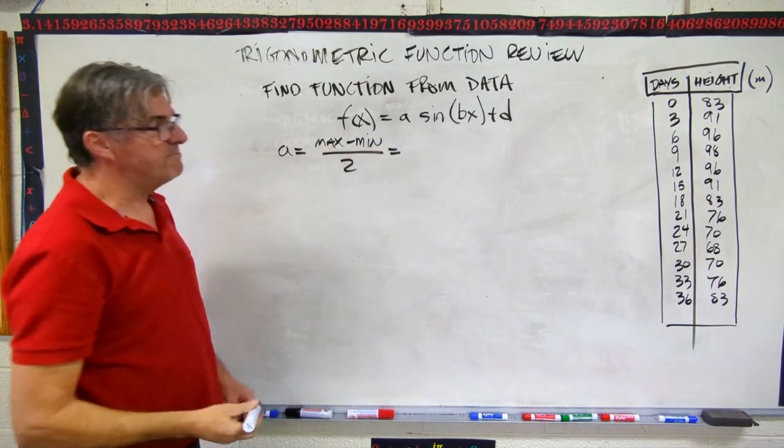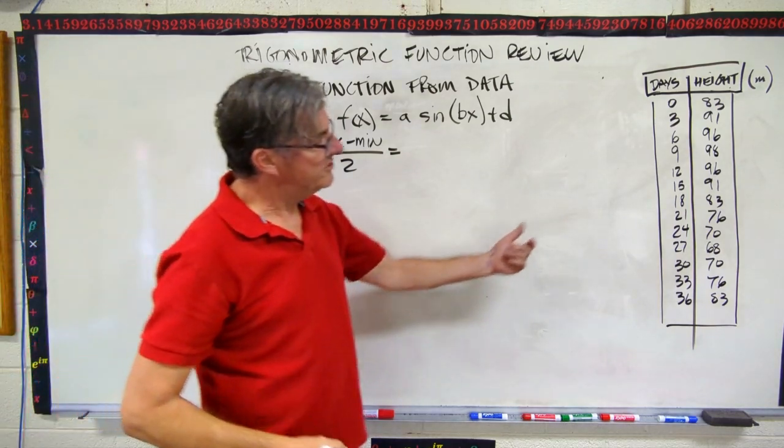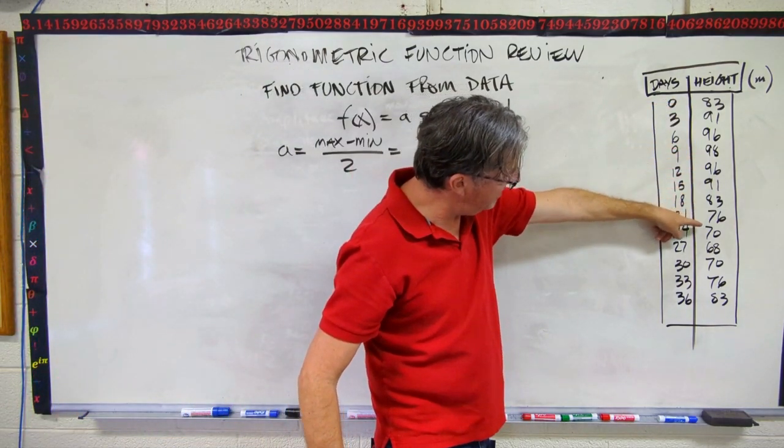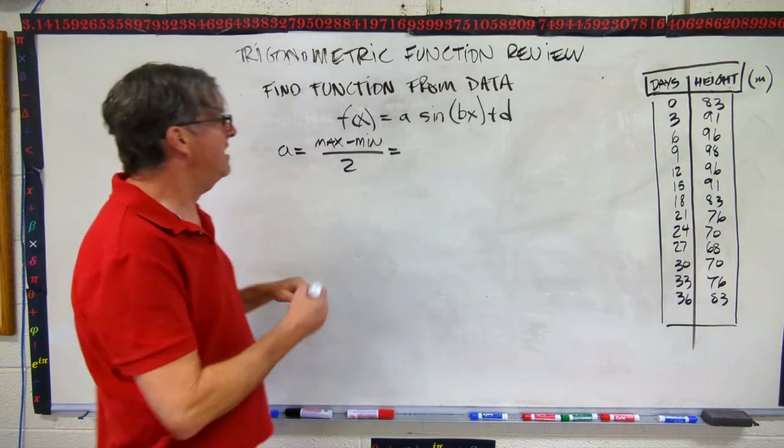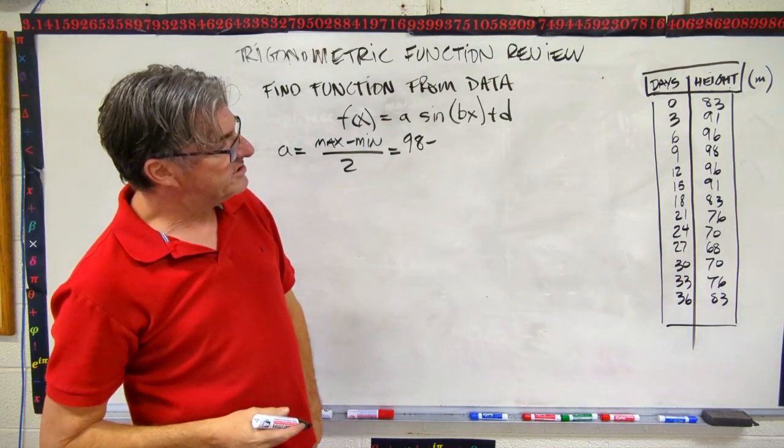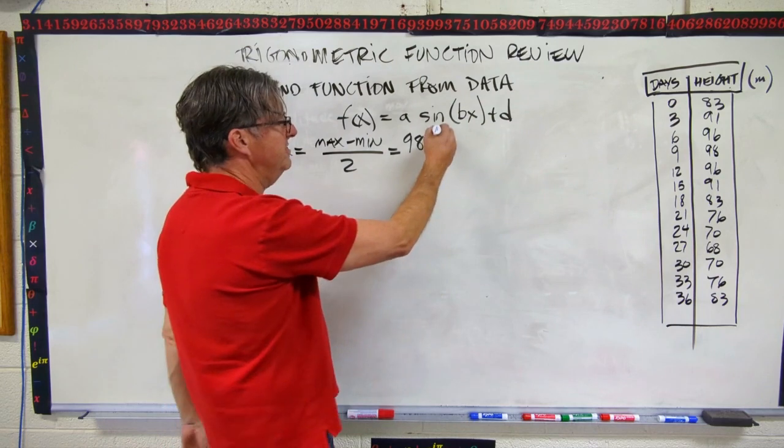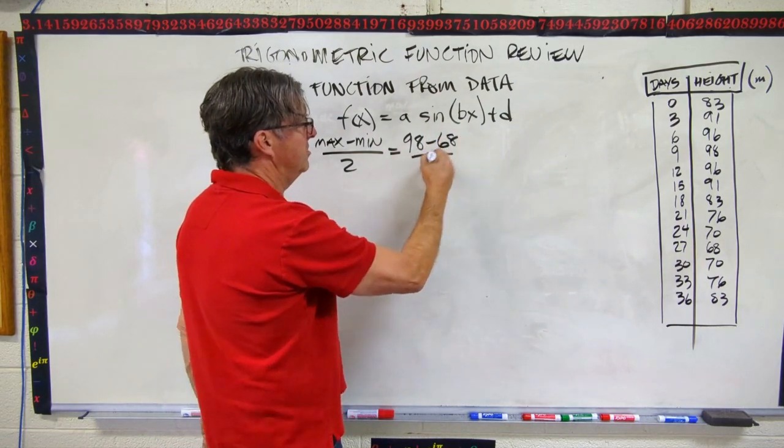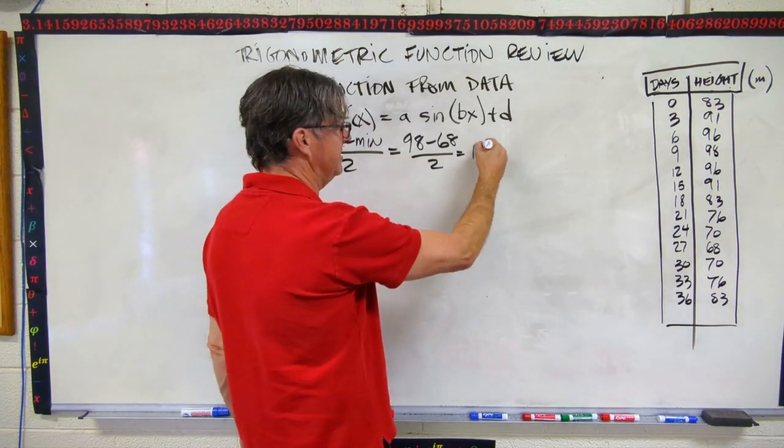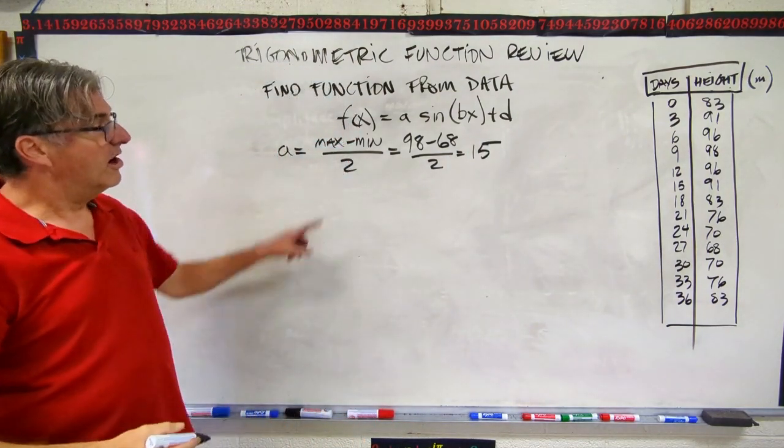So what is our max? So you just have to scan the data there and check it out. We go all the way up, 98. Now we're dropping back down, down, down, down, down to the bottom and back up. So 98 is our max. And what's our min? Well, it looks like the min is 68 right there at day 27. So 68 over 2. That's going to be 30 over 2 or 15. So now we have our A.